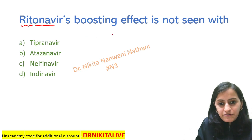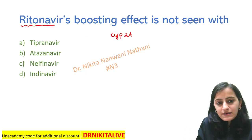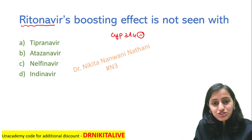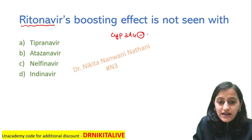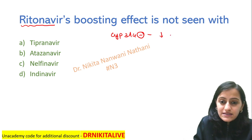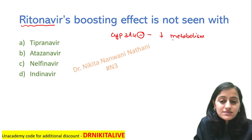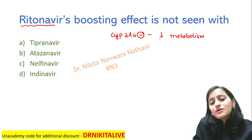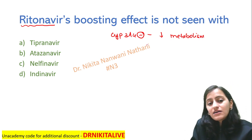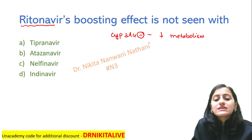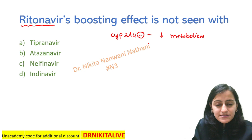Because ritonavir has a cytochrome P3A4 inhibitor action. That is how it decreases the metabolism of the other protease inhibitors, and that is how it increases their availability and decreases the clearance.